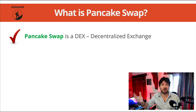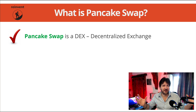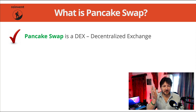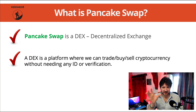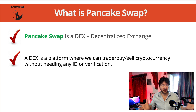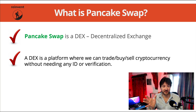There are centralized exchanges like Binance and Coinbase that also allow us to purchase cryptocurrencies, but we have to get verified there and it links up to our bank account — all sorts of ID and different stuff. But PancakeSwap is decentralized, we don't need to do any of that. A DEX is a platform where we can trade, buy, and sell cryptocurrency without needing any ID or verification, just with one or two clicks.